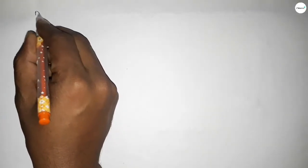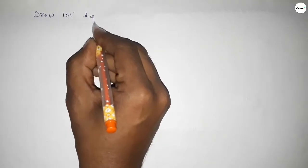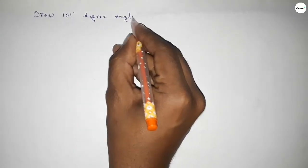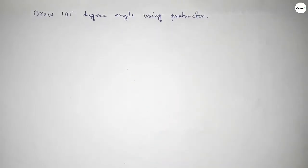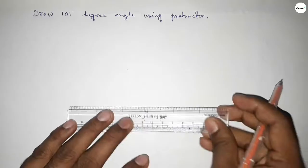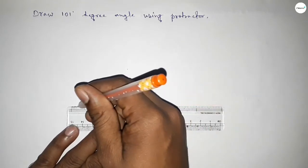Hi everyone, welcome to A-Sized Chair Classes. Today in this video, we have to draw a 101-degree angle by using a protractor. So let's start the video. First of all, we have to draw here a straight line of any length.